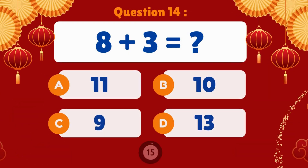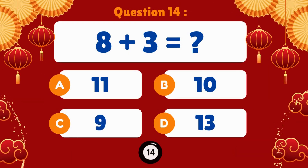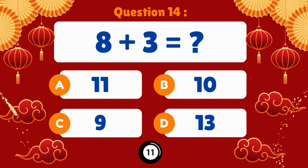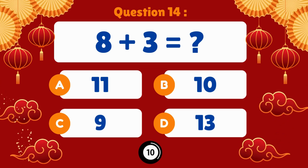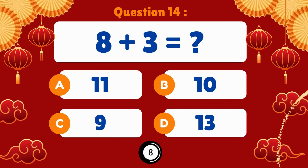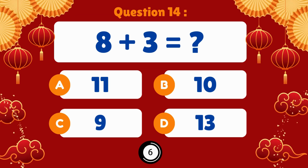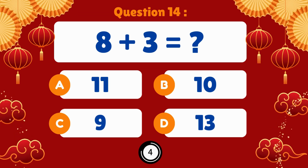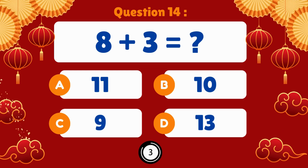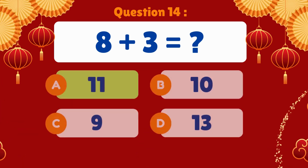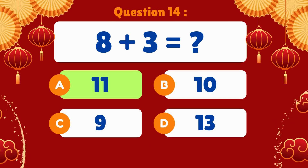Eight plus three. Eight plus three is equal to eleven.